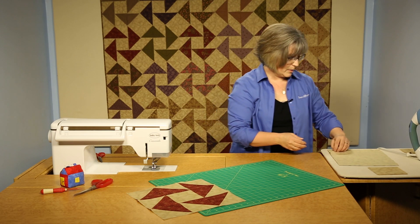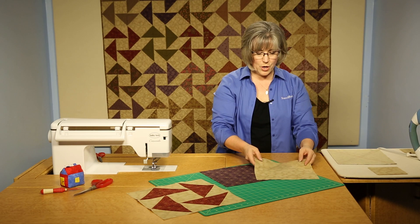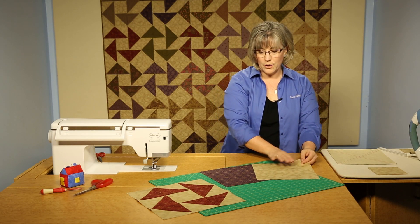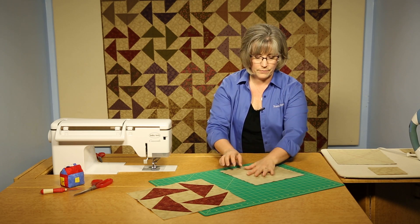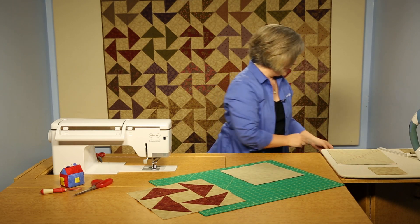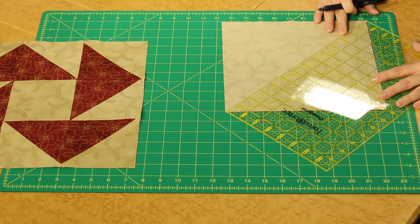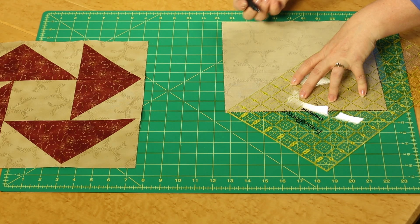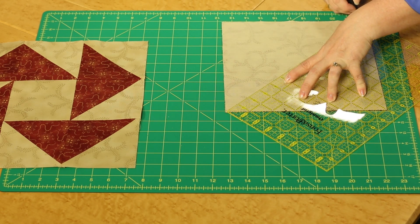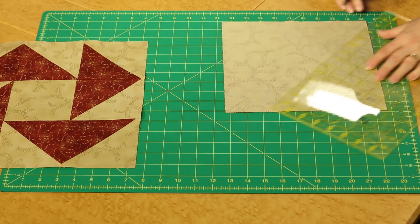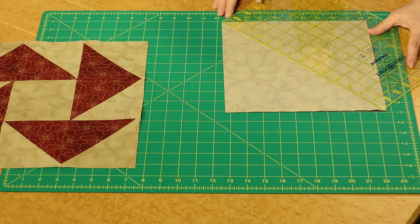I talked about pairing up each of the prints in your pack of 10-inch squares with a background fabric. We're going to be marking the light fabric so it's easy to see. We're going to be marking it with diagonal lines from corner to corner using your favorite marking tool, diagonally across the block and then the other direction corner to corner also.